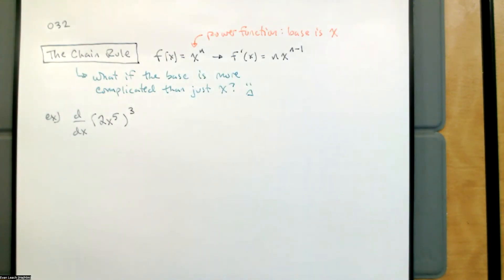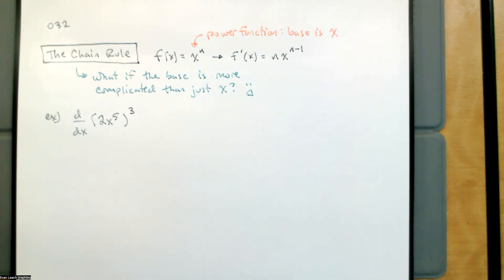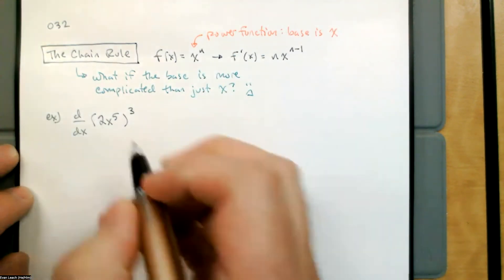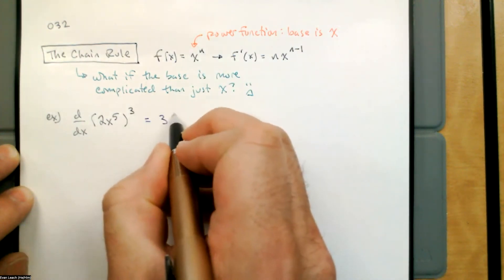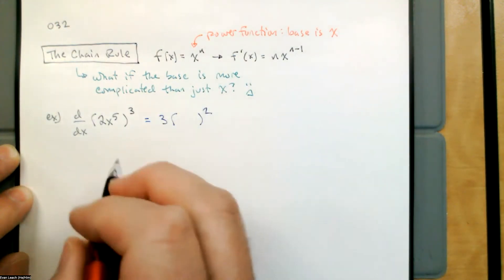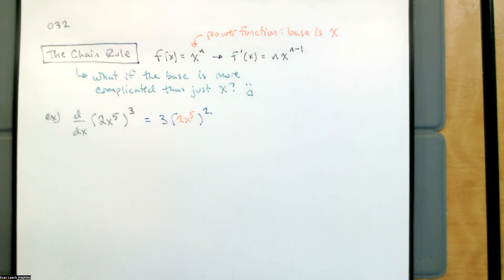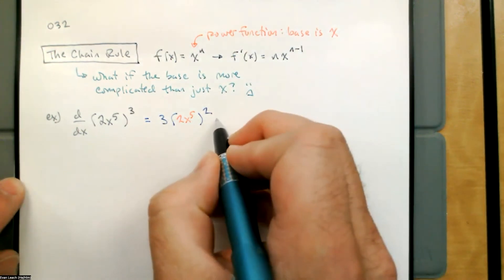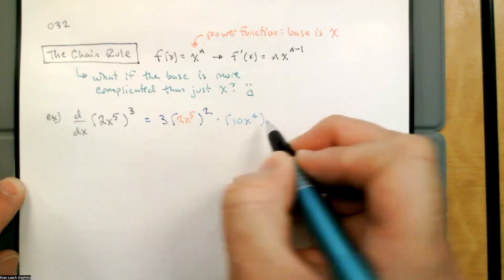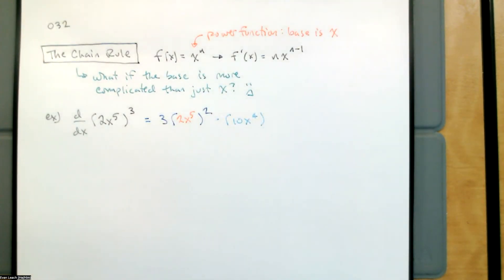Now, we could apply our previous shortcut by writing this as a power function — this is 8x to the 15th, so the derivative would be 120x to the 14th. We can do that just fine, but that's not what we're after today. We're going to use the chain rule. The chain rule says: the derivative of something to the third is 3 times that thing to the second — that's just our shortcut — and then multiply by the derivative of that thing. The derivative of 2x to the fifth is 10x to the fourth. That's the chain rule: multiply by the derivative of the inside.